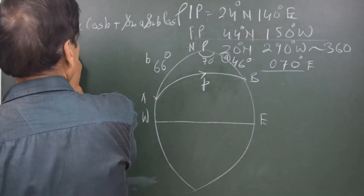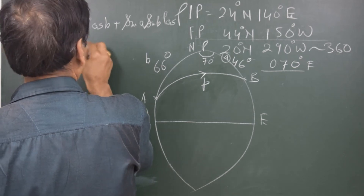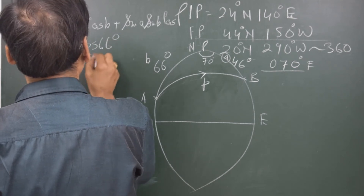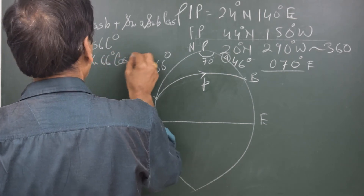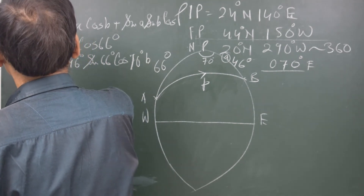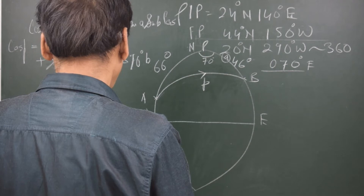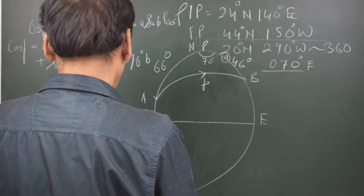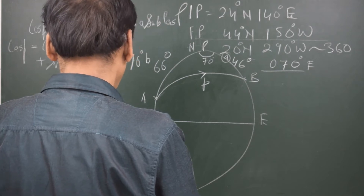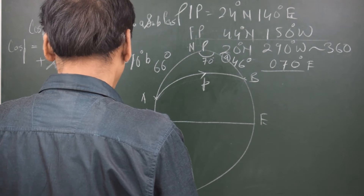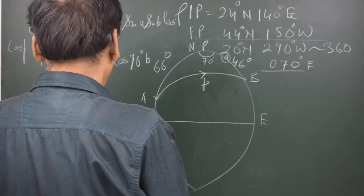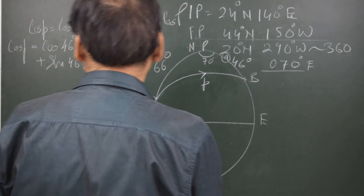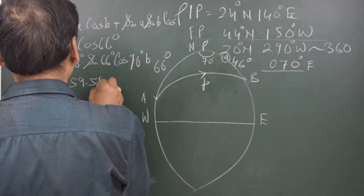Applying the formula: cos(p) = cos(46°)·cos(66°) + sin(46°)·sin(66°)·cos(70°). This equals 0.5073, and taking the inverse cosine gives small p = 59.51 degrees.